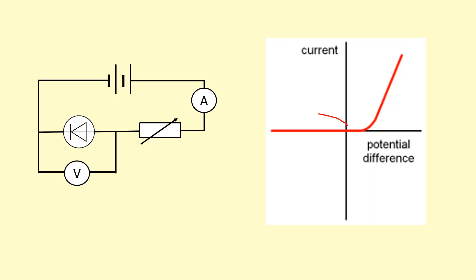As you can see in the negative direction, when I connect the diode the wrong way around, the resistance is very high. So the current is zero. And once it's connected in the correct direction, it doesn't actually start conducting straight away. There's no current until you get to approximately 0.6 volts and then it starts to conduct.